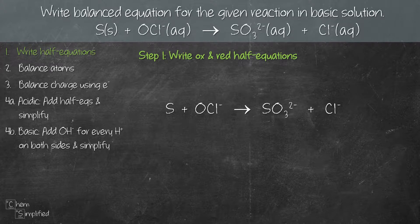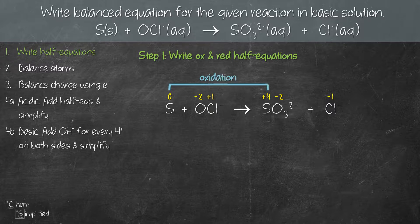Step one: we have to write out the half equations, and before we can do that we'll need to first figure out which is an oxidation half equation and which is a reduction half equation. Let's figure out the oxidation number for each atom. If you need a refresher on finding oxidation numbers, I'll link the video here. From our oxidation numbers, it looks like sulfur undergoes oxidation since its oxidation number increased from 0 to +4, whereas chlorine undergoes reduction because its oxidation number decreased from +1 to -1.